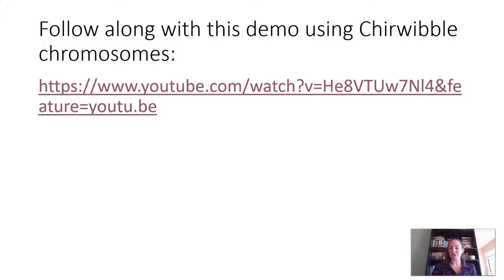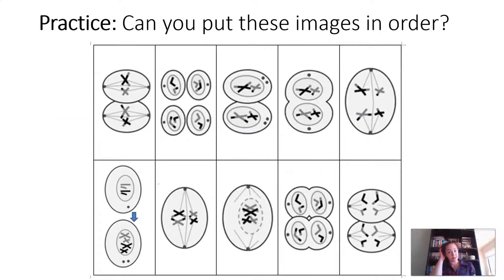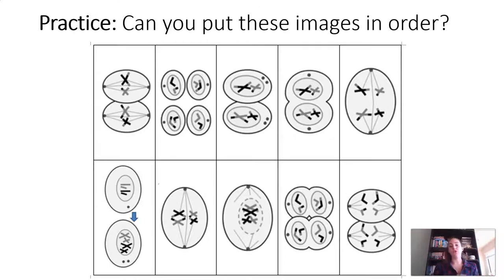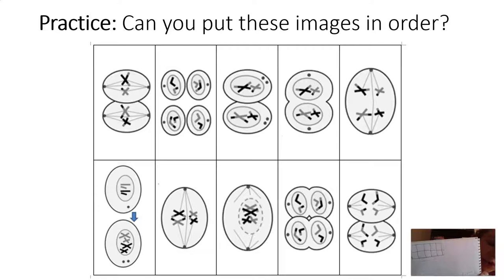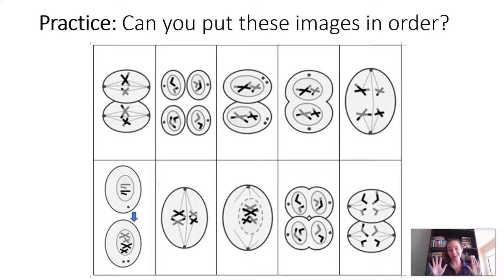Welcome back! I hope you enjoyed that demonstration from Miss Fox and were able to follow along. To check our understanding, let's look at a practice activity. This diagram has ten different images representing different phases of meiosis. On your own paper, make a little chart and try to determine the order these images go in. Write the number you think each one represents. Pause the video now and try it on your own.